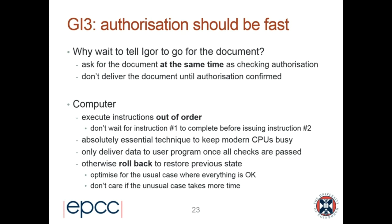Good Intention Three: authorizing should be fast. Why wait to tell Igor to go for the document? Instead, say 'Igor, get the document while I check your authorization — but don't deliver it until authorization is confirmed.' We're still safe; we're not giving documents out unless authorization passes. Modern CPUs execute instructions out of order: they don't wait for instruction one to complete before issuing instruction two. This is essential to keep CPUs busy — modern CPUs have very deep pipelines with dozens of instructions.